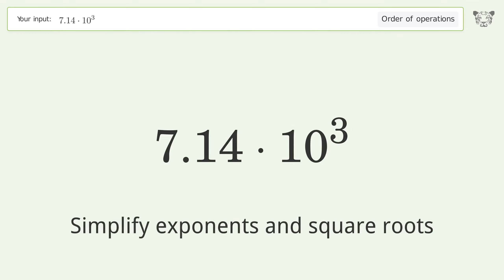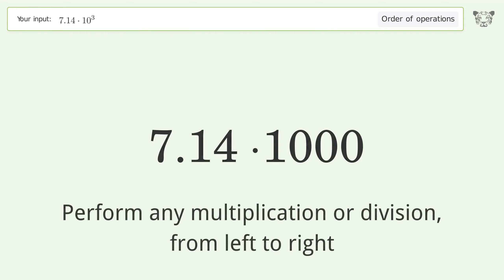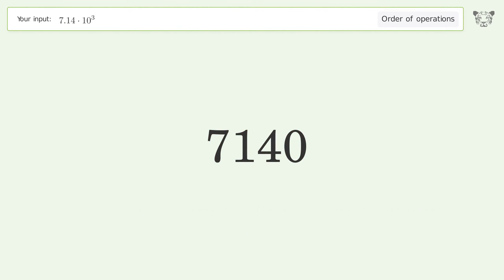First, simplify exponents and square roots: 10 to the power of 3 equals 1000. Then perform multiplication from left to right: 7.14 times 1000 equals 7140. And so the final result is 7140.